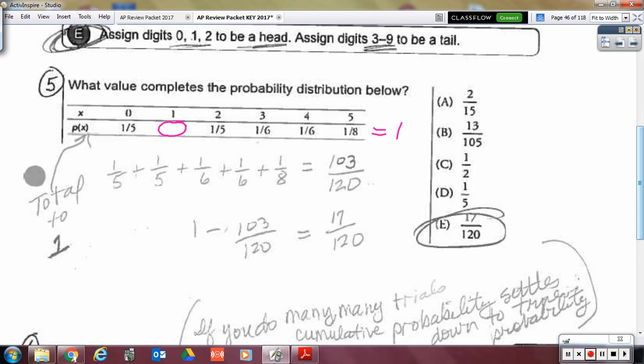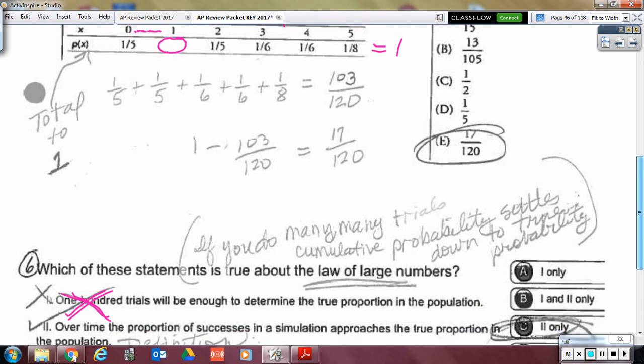Okay, number five. This is considered discrete probability because, do you see how there's no intermediary values you could get? The only values you could get are zero or one or two or three. But anyway, all those probabilities, if that's all that can happen, have to total up to one. So I just would add all those up that are there, subtract from one, and find what's missing. And that ended up being 17 over 120.